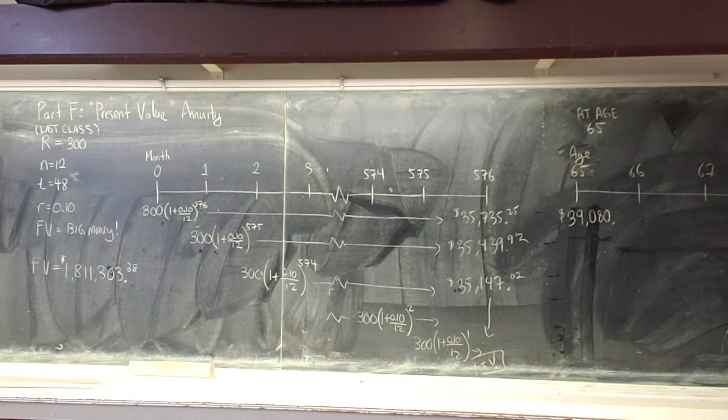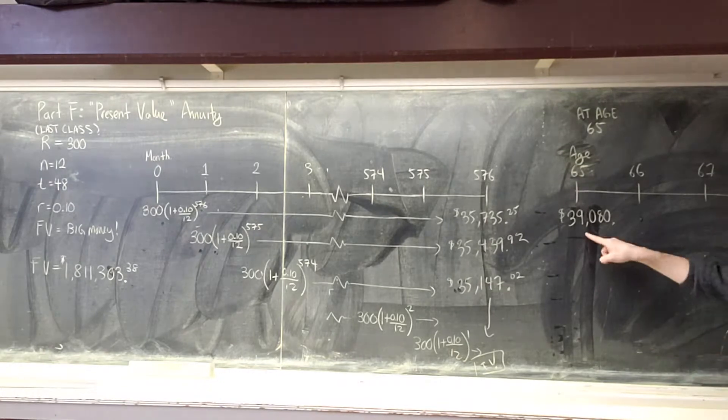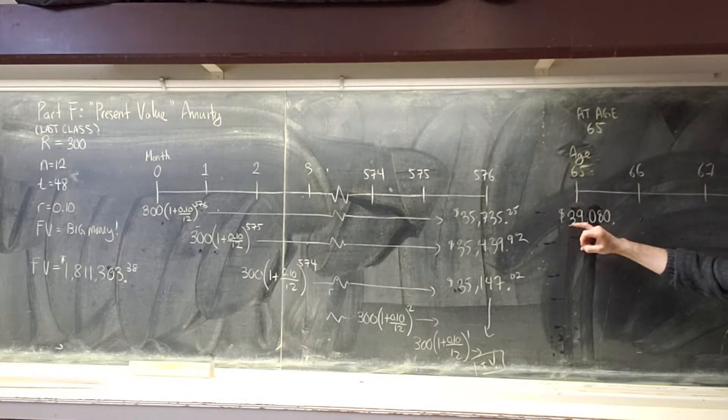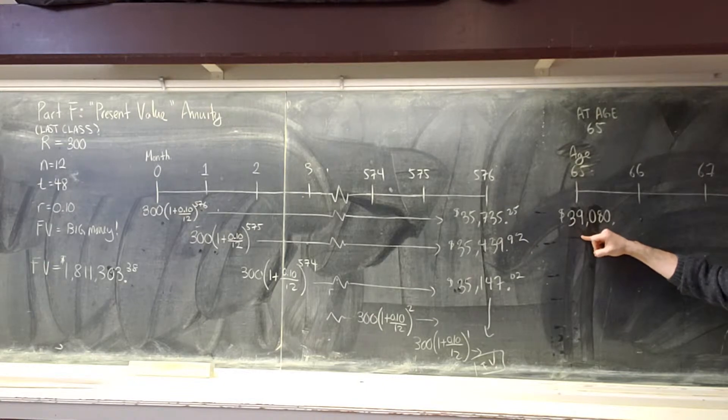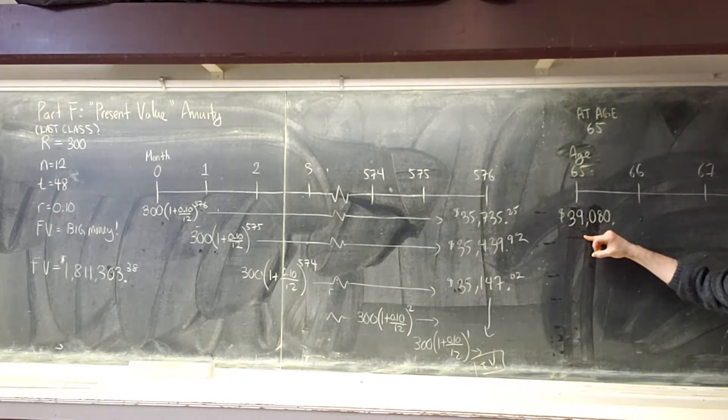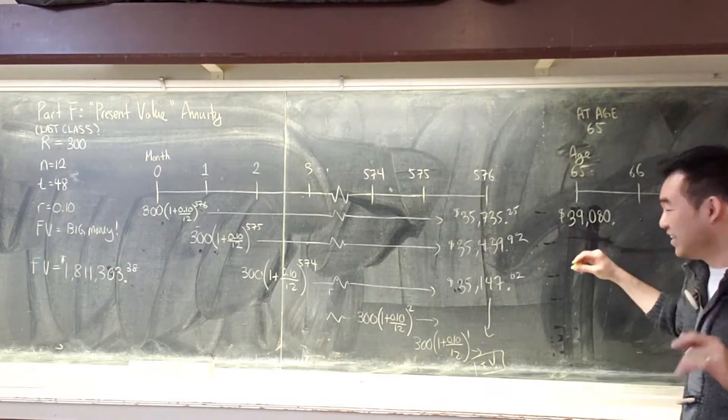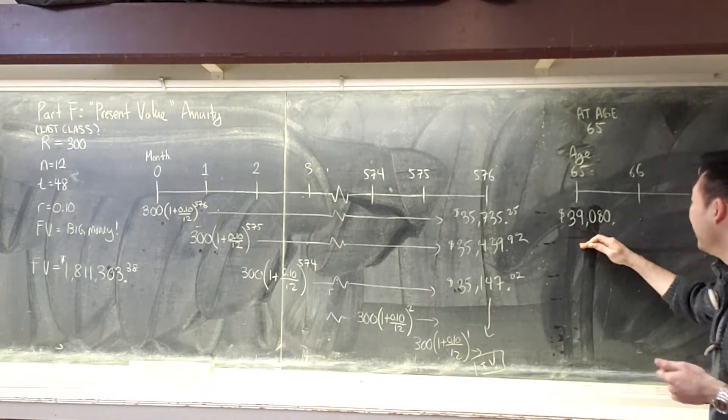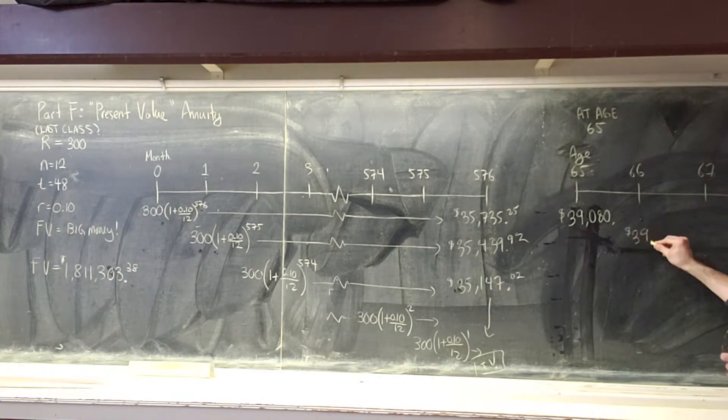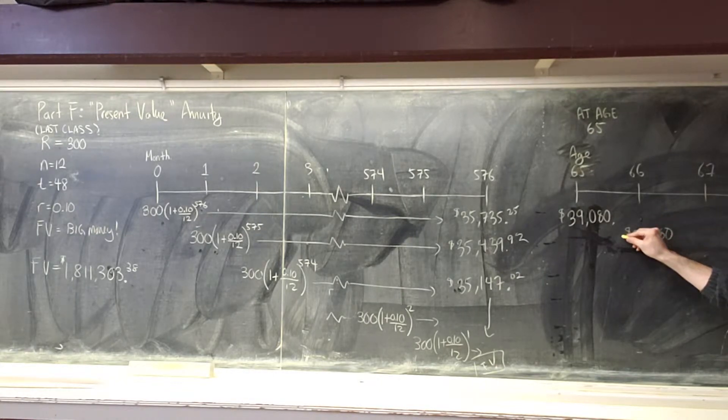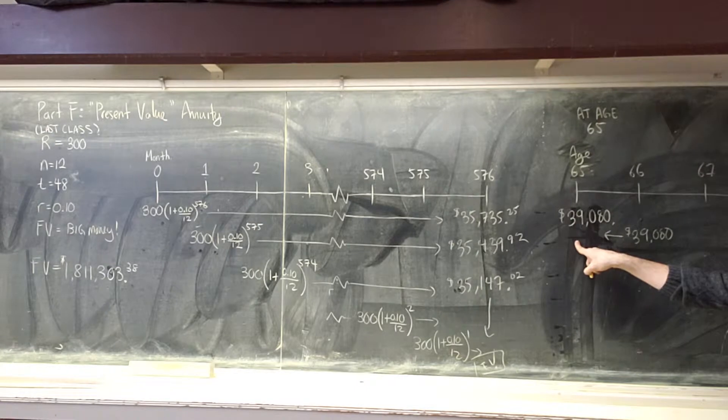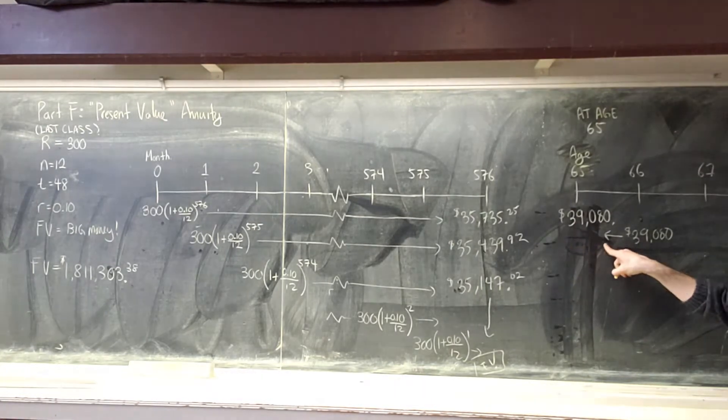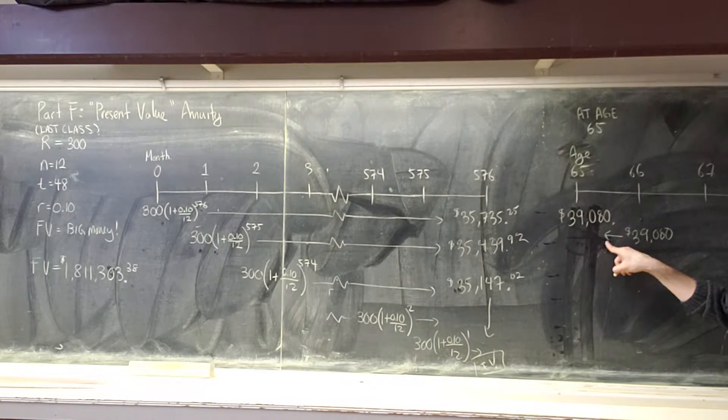So, this is present value. If I need this much at the age of 65, how much do I need at the age of 65? It's not a trick question. Just answer it clearly. If I need $39,080 at the age of 66, how much do I actually need at the age of 65? In other words, you have one year to build interest. So, do I need more money here, or do I need less money here? Less money.